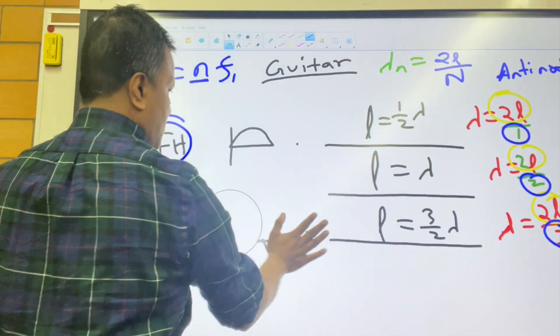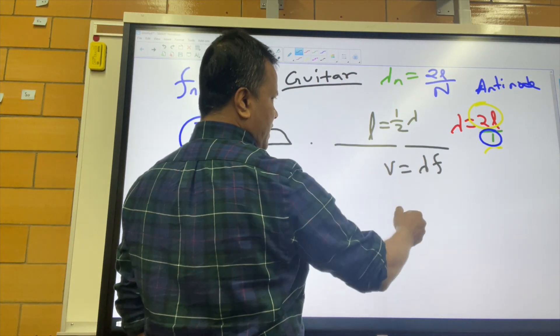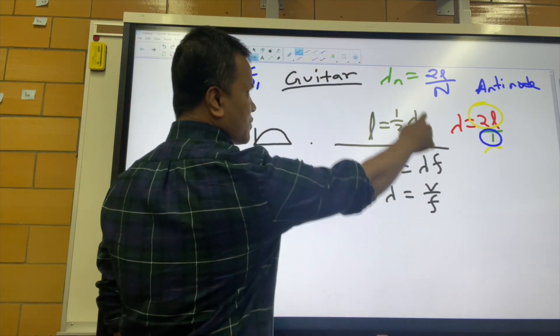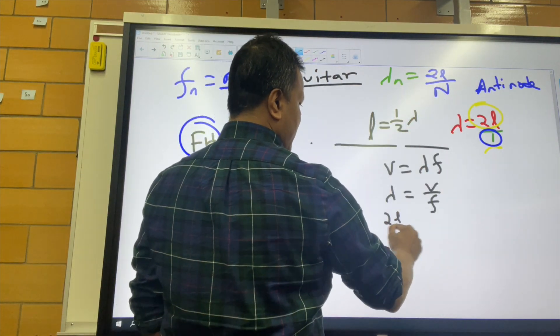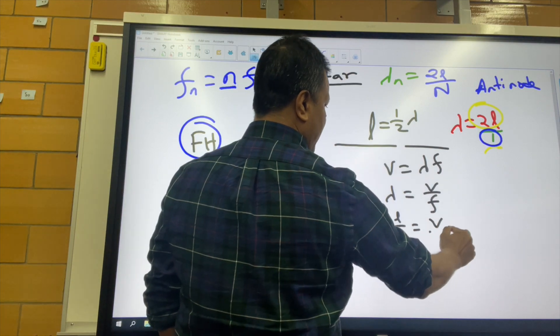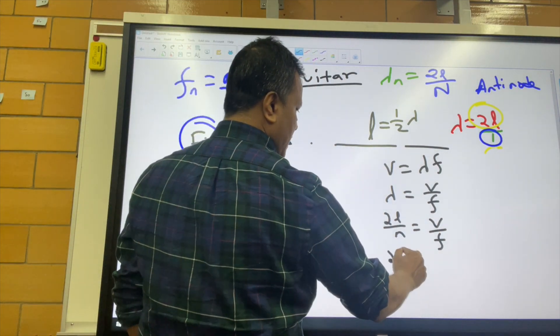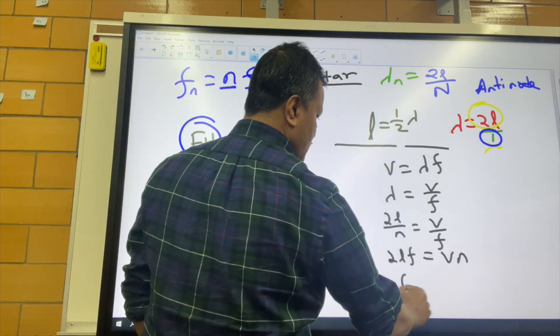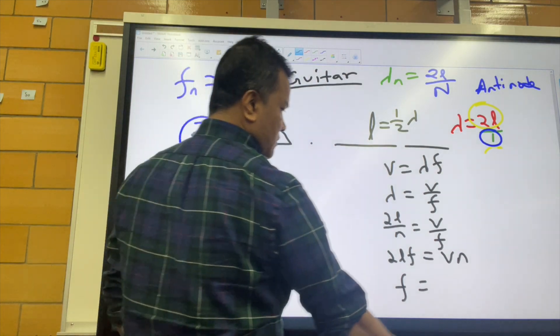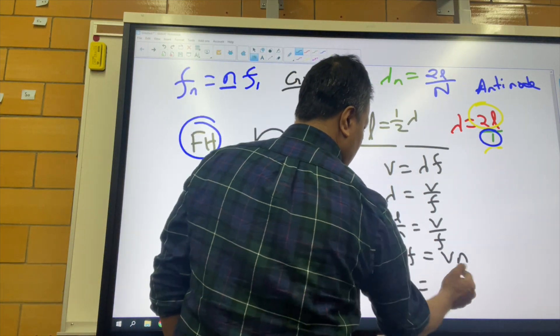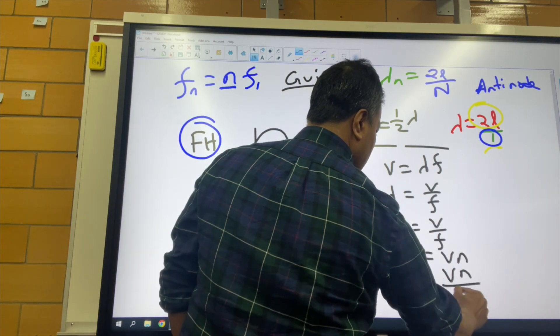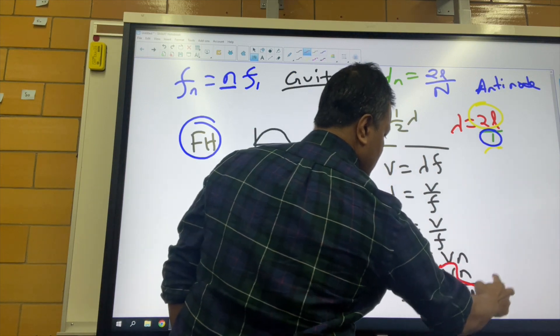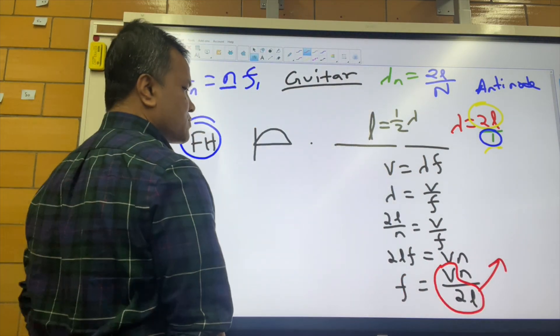We're going to use only the first one. We have to find the lambda. Lambda is velocity over frequency. We already know lambda is 2L over n. So 2L over n equals V over f. Then 2Lf equals Vn. So f equals Vn over 2L. Now we have to find what V over 2L is.